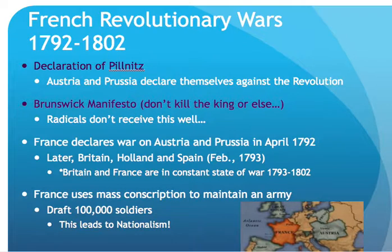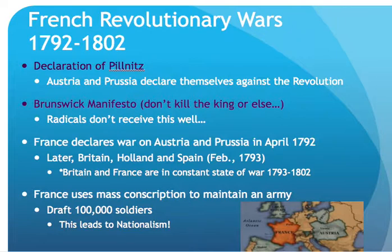This leads to the end of King Louis XVI's life and the beginning of the French Revolutionary Wars. Austria, where Marie Antoinette was from, and Prussia were trying to help Louis regain his throne. They wrote strict orders to Paris saying don't kill the king or they would intervene. That didn't sit well with the Jacobins and Robespierre — the radicals decided to do exactly that and took the king's head, beginning the French Revolutionary Wars.